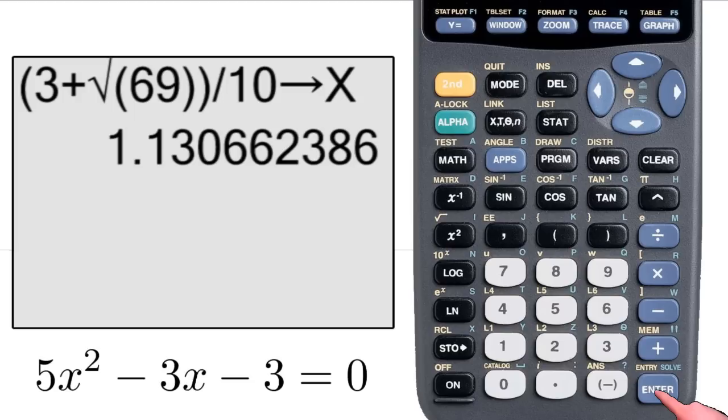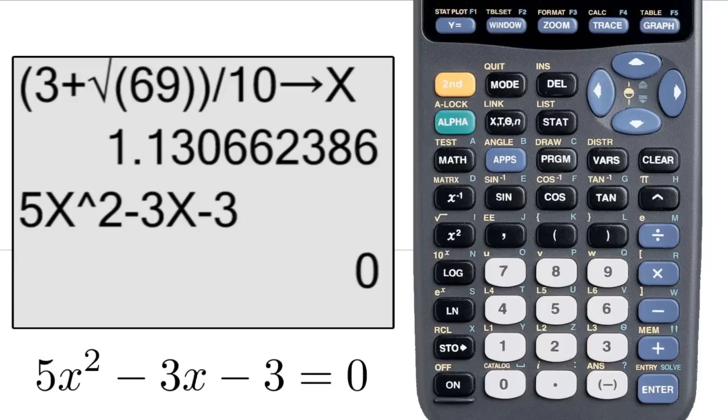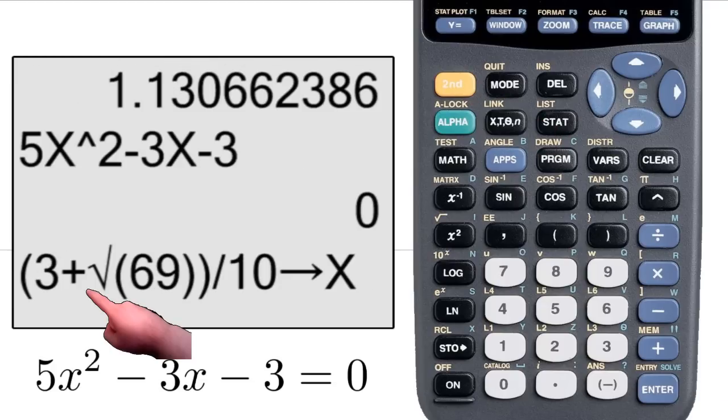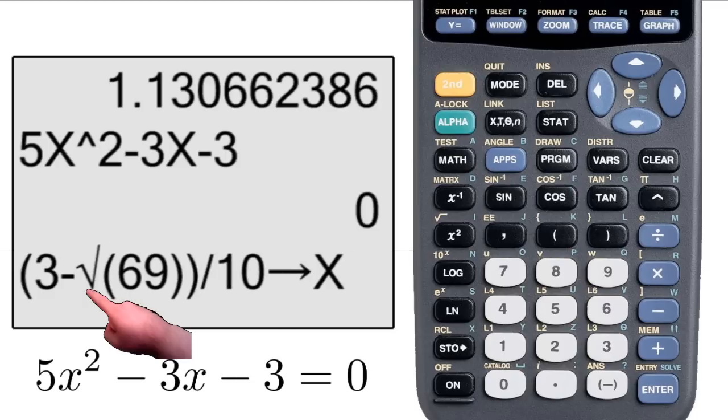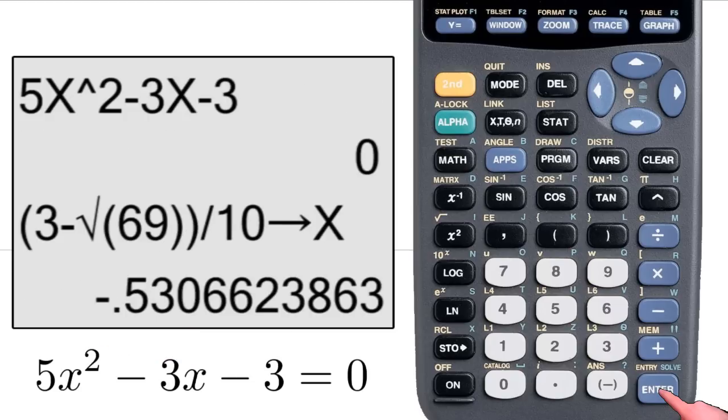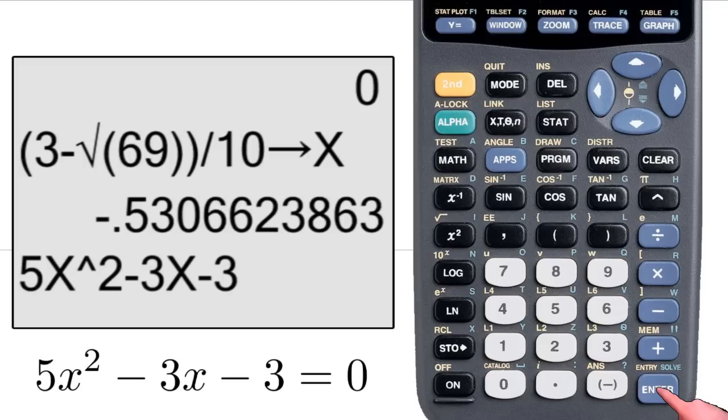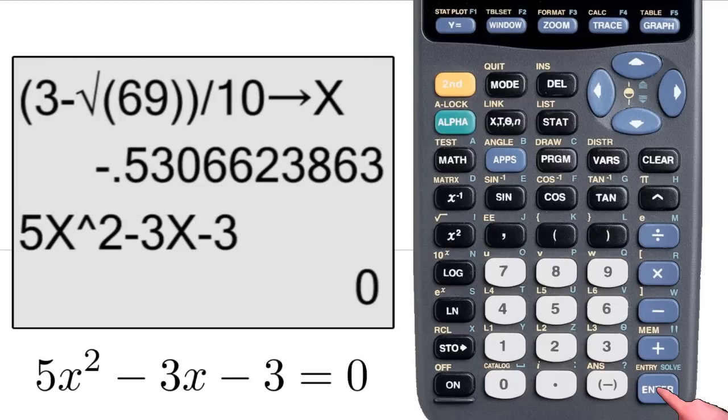So now I put the expression with X in it, 5X squared minus 3X minus 3. And it returns zero, so now let's try it with minus by hitting entry twice and changing that plus to a minus and hitting enter. Then hitting entry twice to go back to the equation and hit enter. So it returns zero again on the minus.